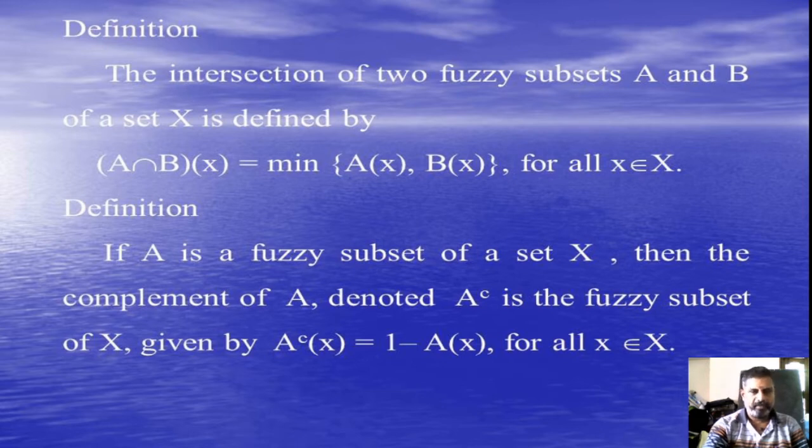Next one is the complement operation. A complement of A is a Fuzzy Set of set X. The complement of A is denoted as A^c(x) = 1 - A(x) for all x belongs to X.